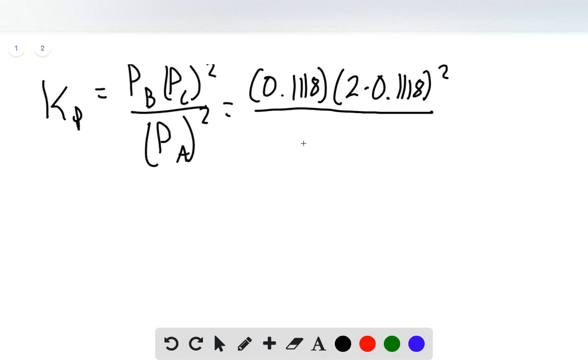And then our partial pressure of A is our 55 millimeters of mercury that it tells us, divided by 760 to convert into atmospheres, which gives us 0.0724.